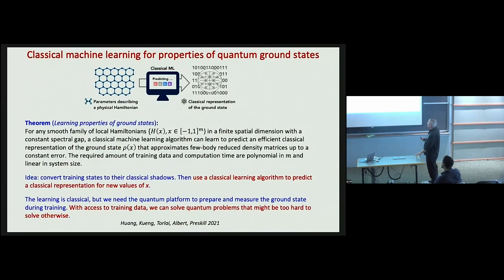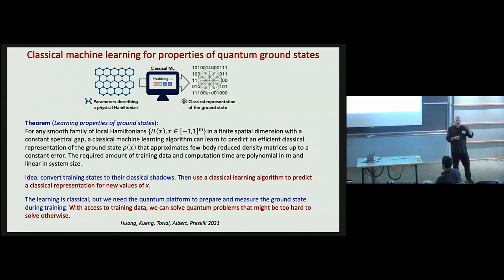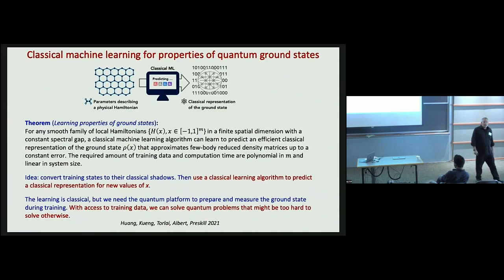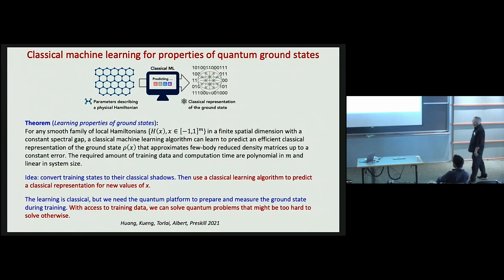We can make such a rigorous guarantee in a couple of settings. One is learning properties of ground states of local Hamiltonians. Consider a family of Hamiltonians smoothly parameterized by some set of real parameters x. For values of those parameters we choose to sample, we get access to the corresponding ground state, convert it to a classical shadow, and try to generalize those classical shadows to new values of x different from those encountered during training. For local gapped Hamiltonians, that can be done efficiently — the amount of training data needed and the computation time both scale reasonably with system size and the dimension of the parameter space.